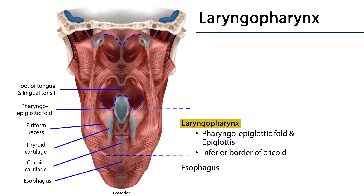The contents of the laryngopharynx include the passageway into the larynx via the laryngeal inlet, and the entryway to the esophagus at the inferior border of the cricoid cartilage at C6. We also have two small spaces known as the piriform recesses, which are spaces where food can sometimes become stuck.